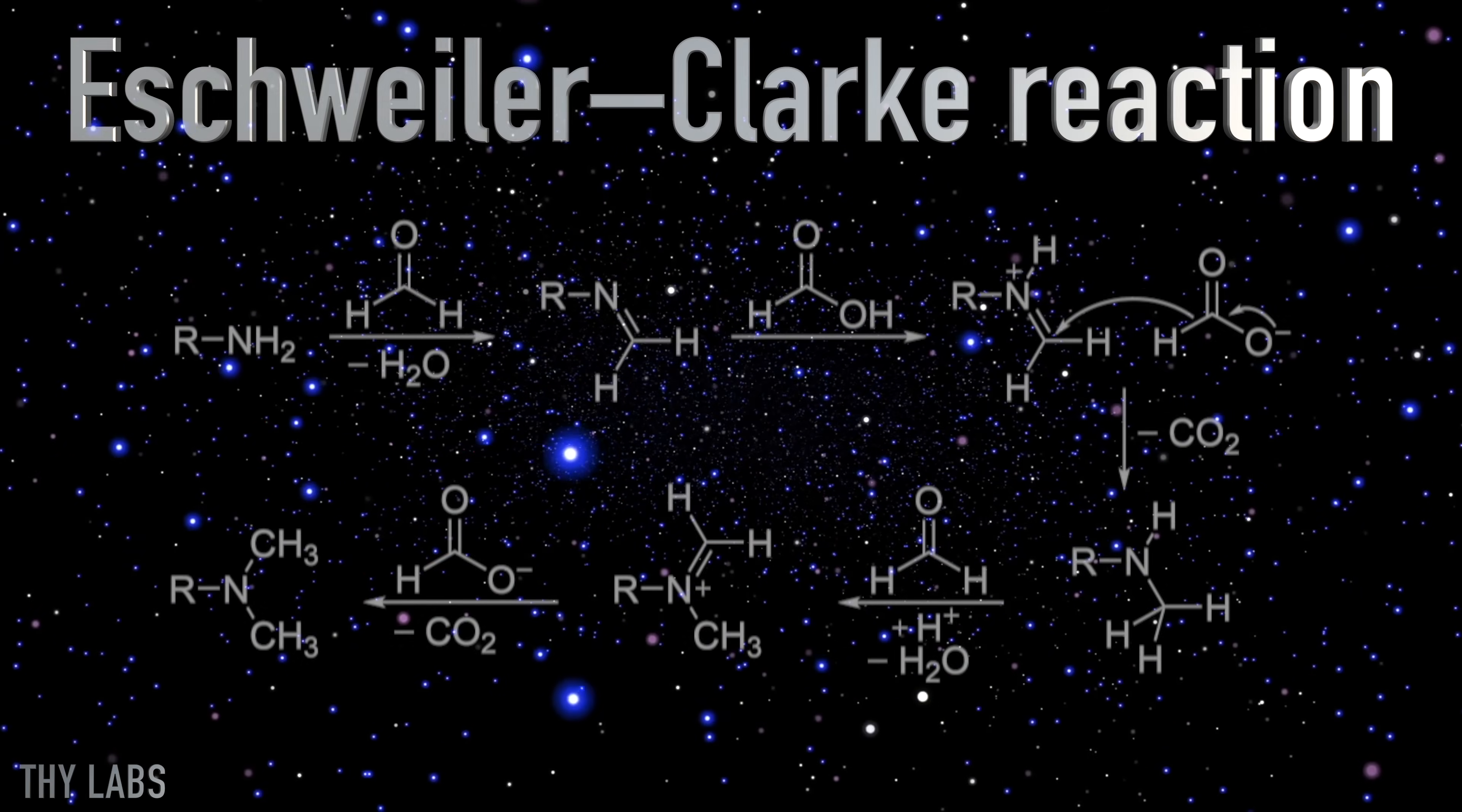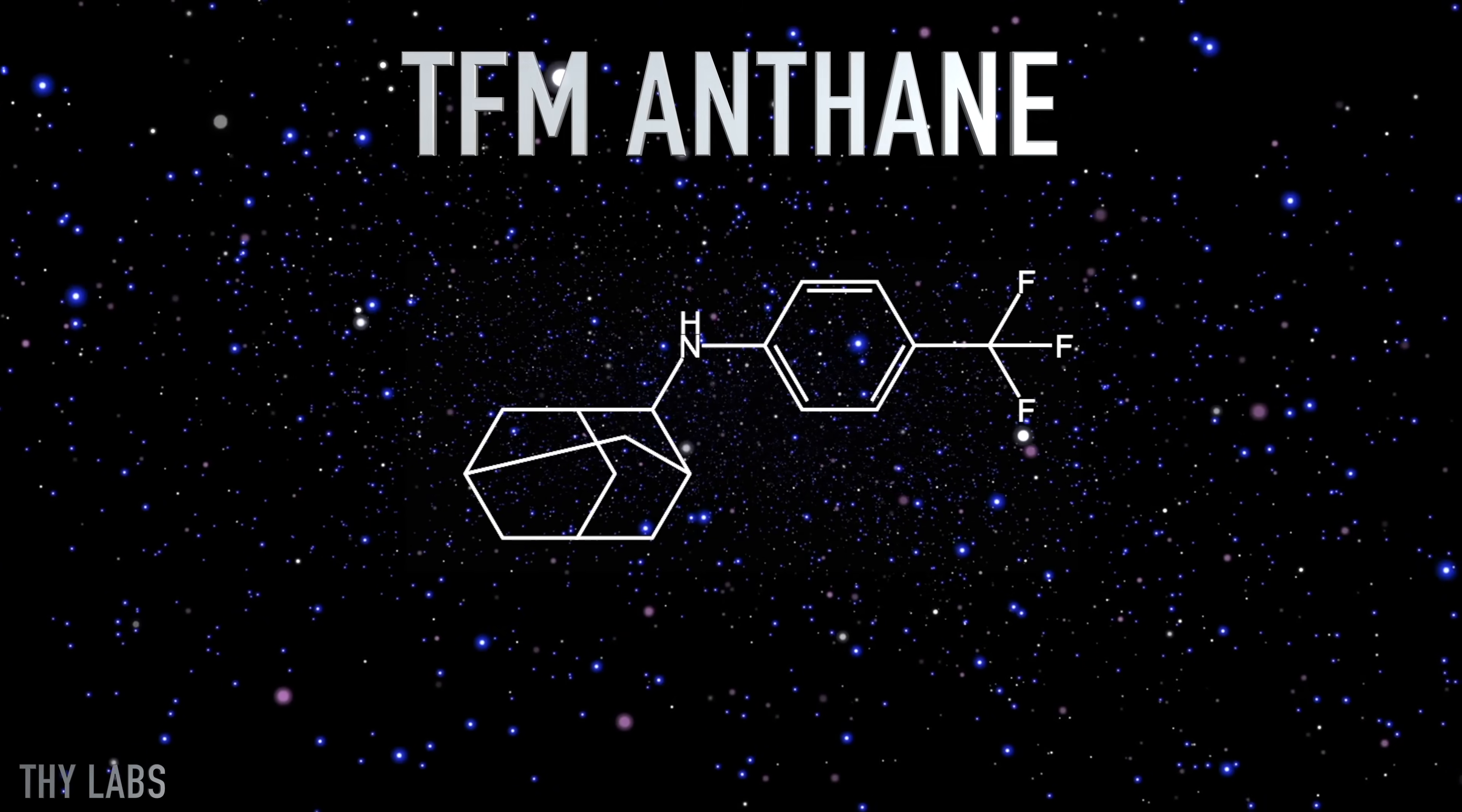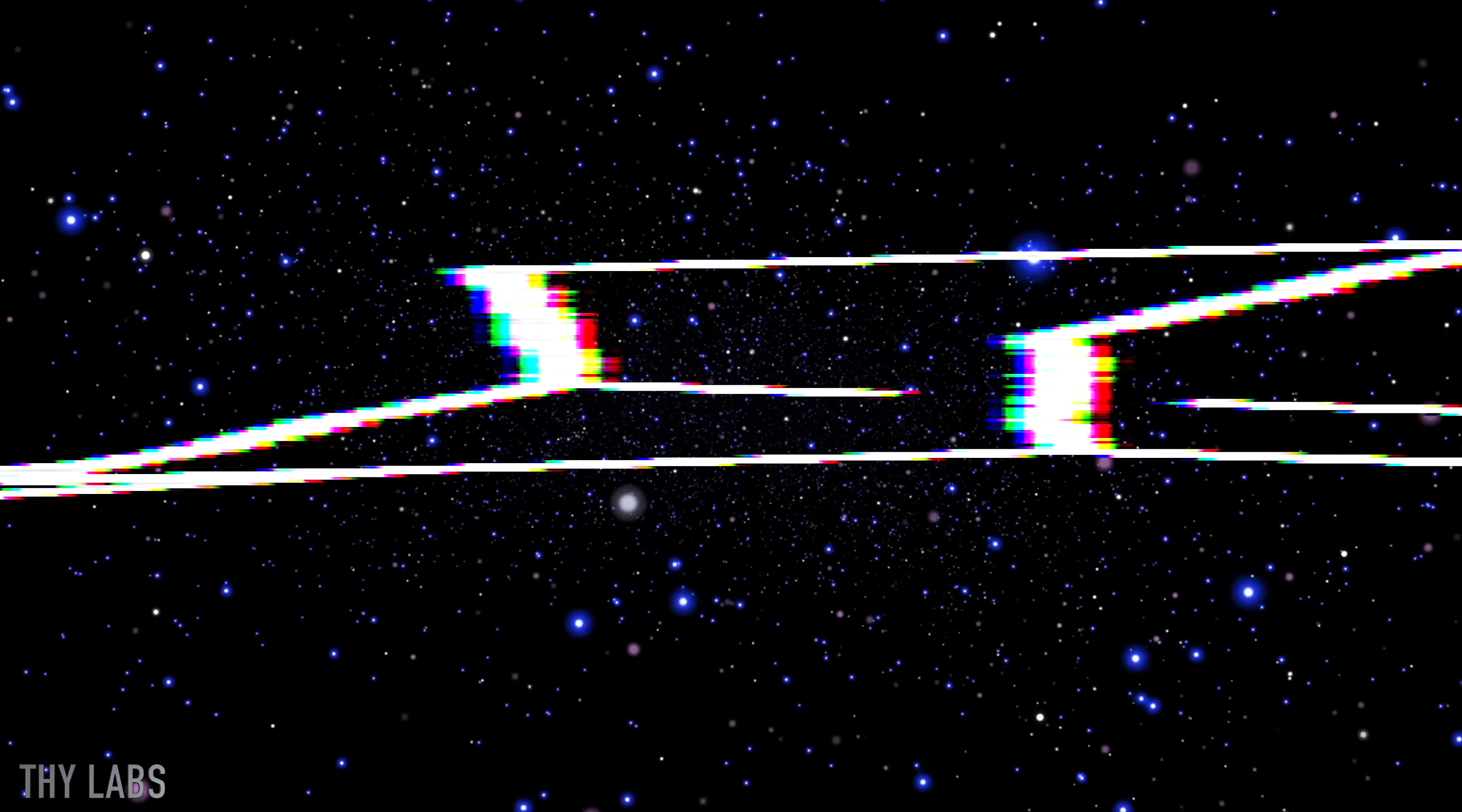This specific reaction is called the Eschweiler-Clarke reaction. But you may have noticed that this reaction led to a dialkylated product and I only got a monoalkylated one. Well, as it turns out, the adamantanone is so bulky that the dialkylation is practically impossible.